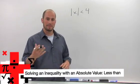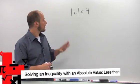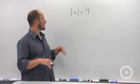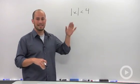So now we're going to talk about absolute value inequalities where we're actually dealing with the absolute value being less than the number. In this example we're going to look at the absolute value of x is less than 4.